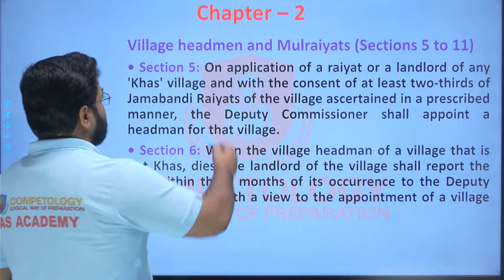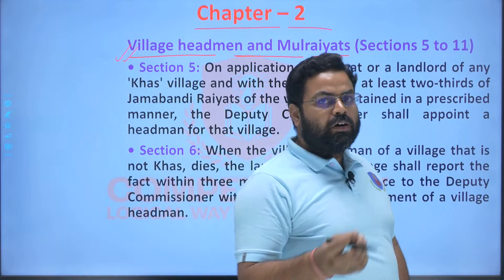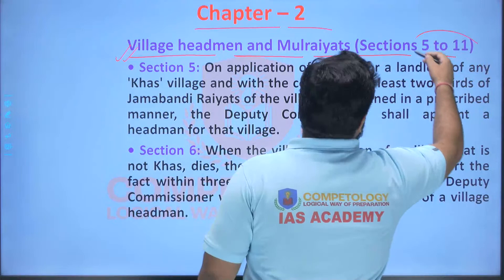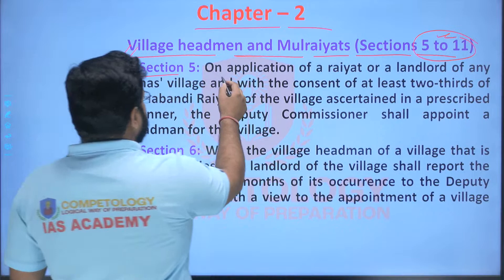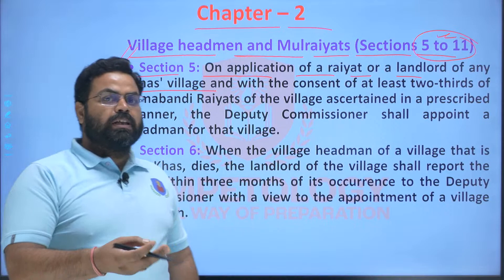Chapter two covers the village headman and Mool Raiyat — their responsibilities, work, functions, and attributes. This runs from section 5 to 11. Section 5 says that on the application of a Raiyat or a landlord of any Khas village — and we have already seen that wherever there is no Mool Raiyat or village headman it is a Khas village — the DC shall appoint a headman for that village.